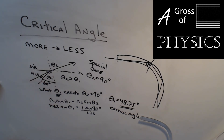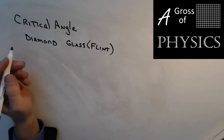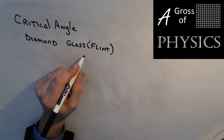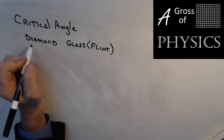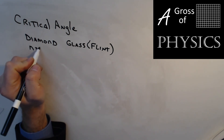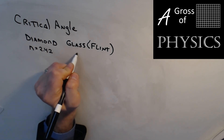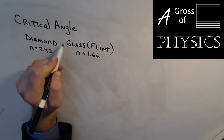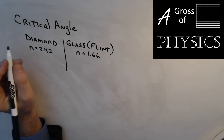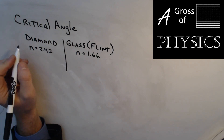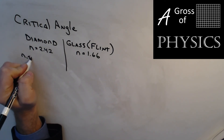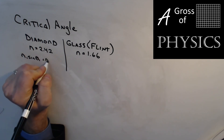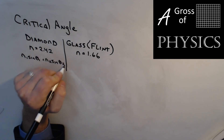Let's find the critical angle for two more materials: diamond and flint glass. The index of refraction for diamond is 2.42, and for flint glass it's 1.66. We'll say each is going into air. Using N1 sinθ1 = N2 sinθ2: for diamond, 2.42 sinθ1 = 1 × sin90 = 1.